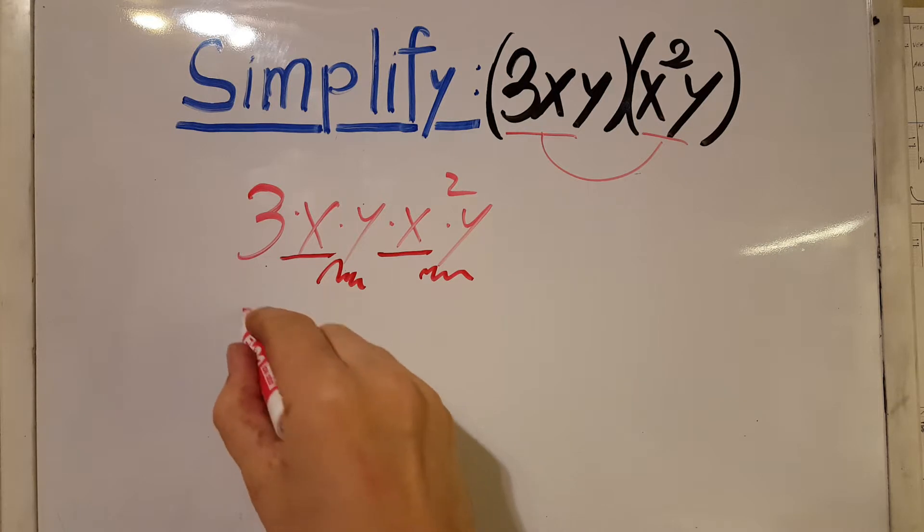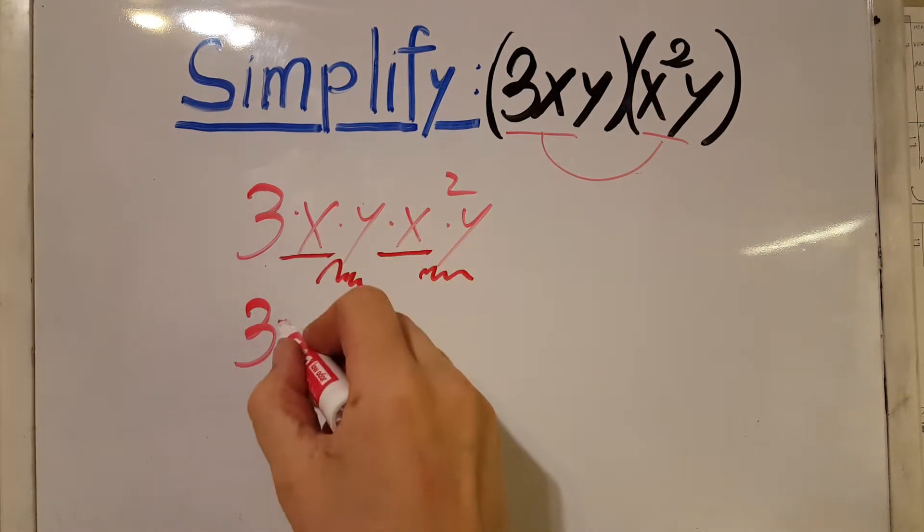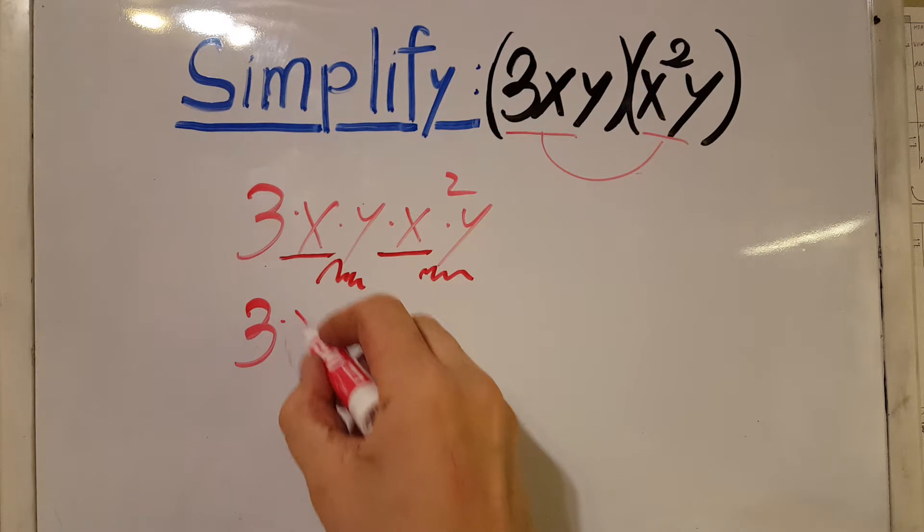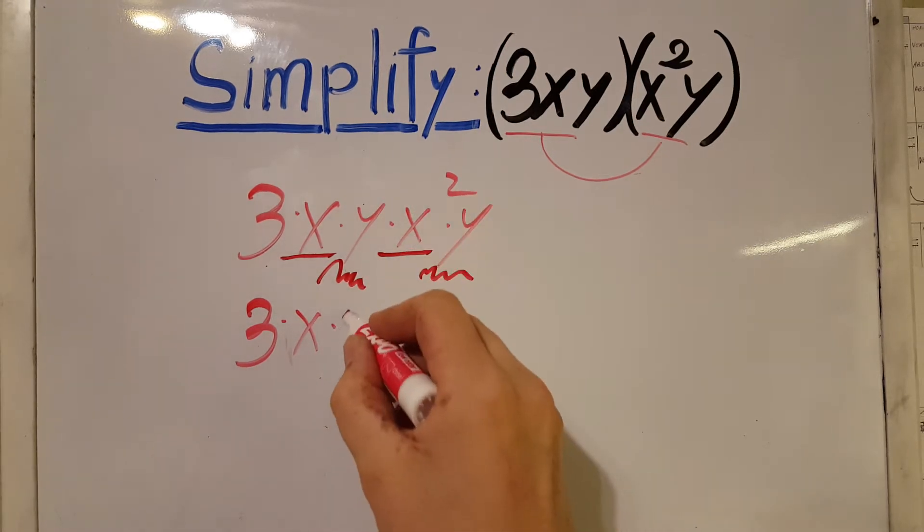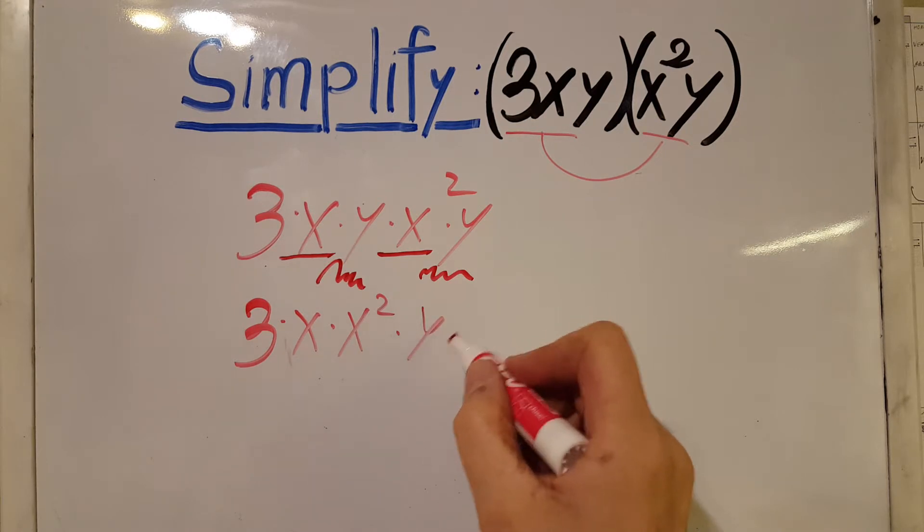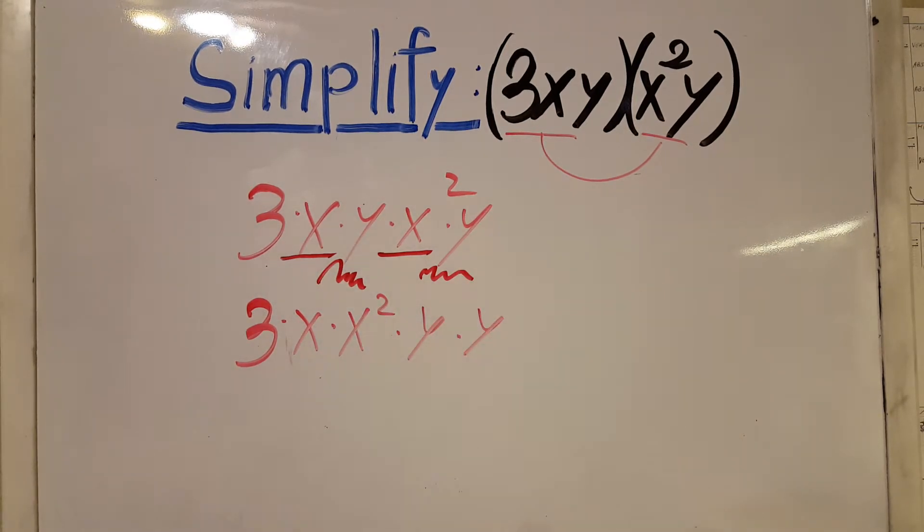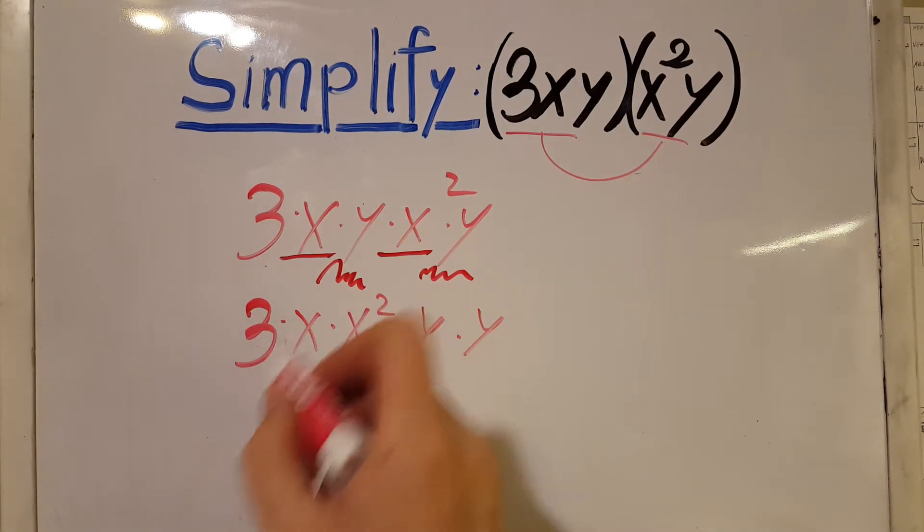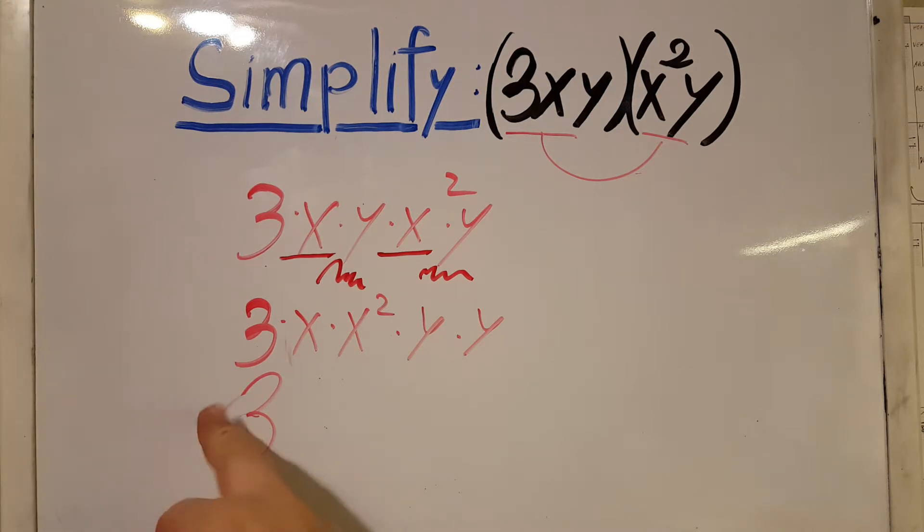So we're going to have 3 times x times the x squared times the y times the other y. Now we're going to go ahead and use the rules of exponents.